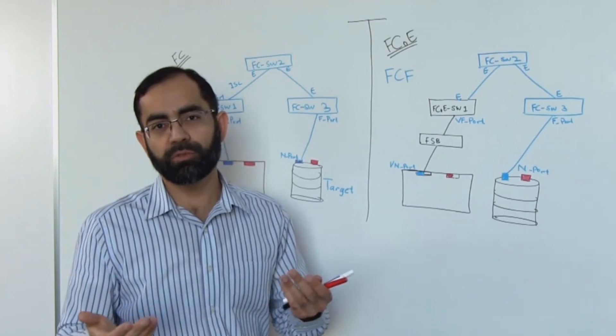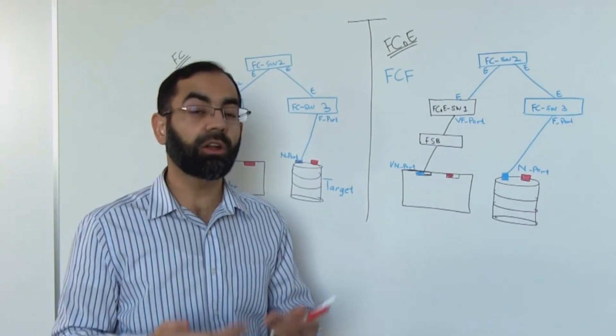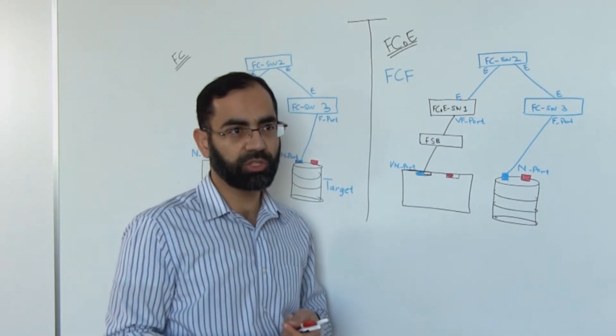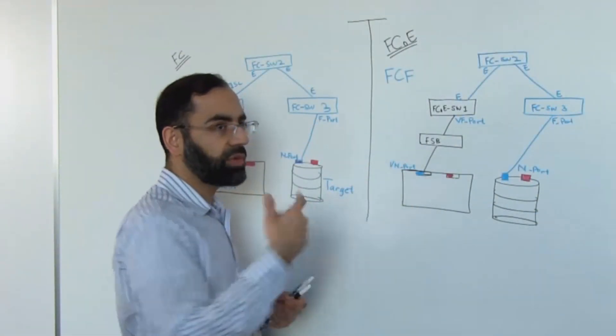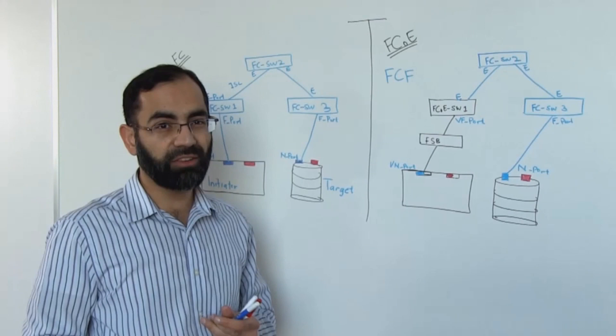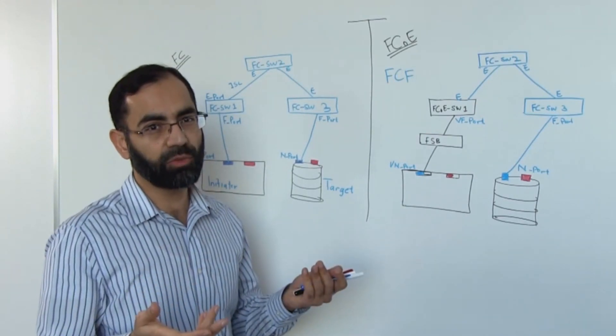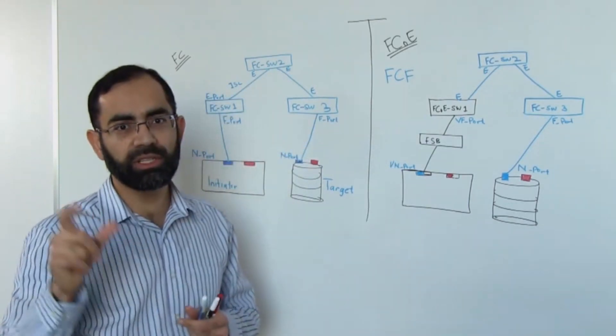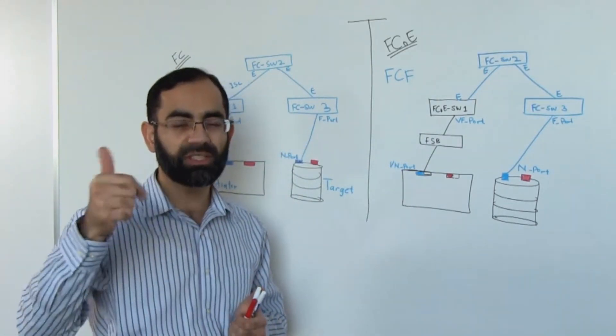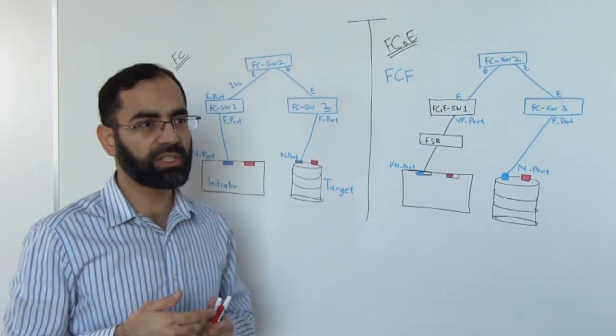From Dell perspective, our S4810 switch, MXL and IOA are all examples of FIP snooping bridges. Even though FIP snooping bridge supports FCoE transit traffic, it is not technically an FCoE switch. For an FCoE switch, it must support FCF functionality and more importantly it needs to have the capability to provide services and encapsulation and decapsulation services as well.